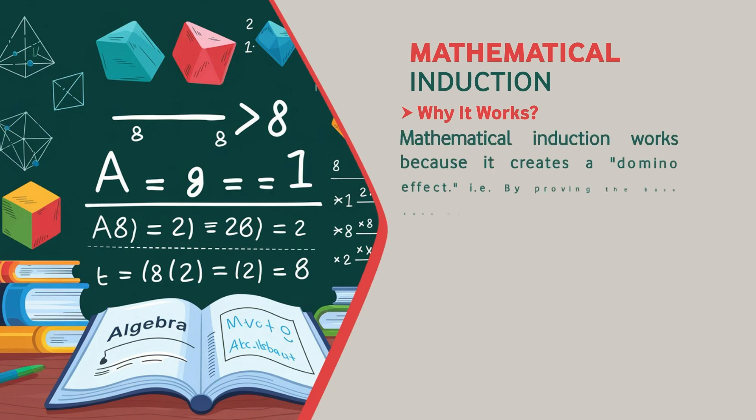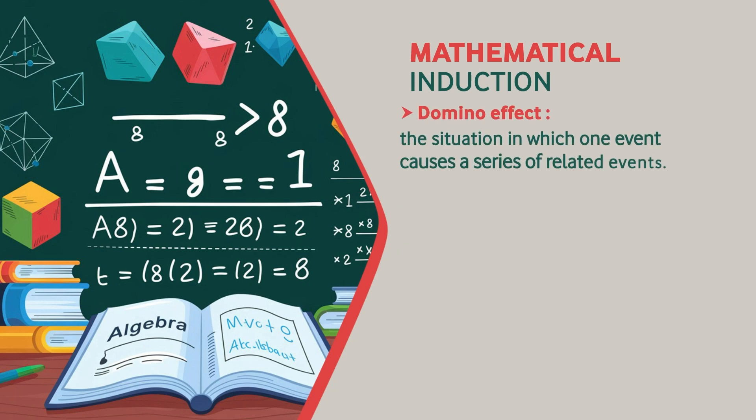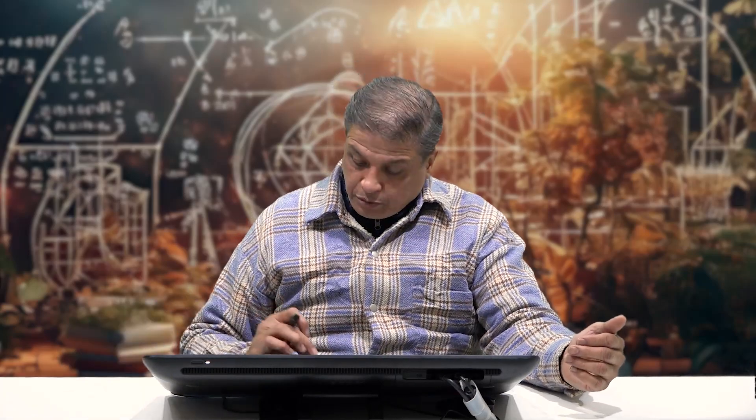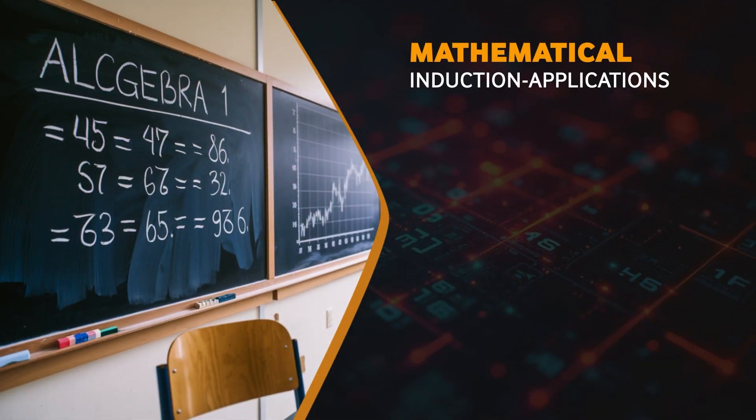Mathematical induction works with the domino effect — a situation in which one event causes a series of related events, meaning things are interconnected. So mathematical induction exercises the domino effect: event 1 is connected to event 2, connected to event 3, and we follow the pattern to derive an expression for the nth instance. On the basis of that pattern, we try to understand how an expression for the nth event is true for any other occurrence — the (n+1)th or (n+2)th event — and we generalize the expression. Mathematical induction is thus used for the generalization of expressions and formulas.